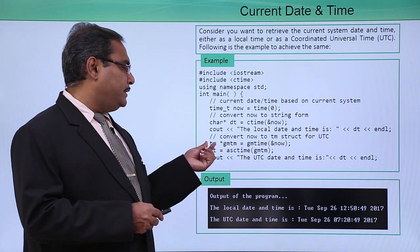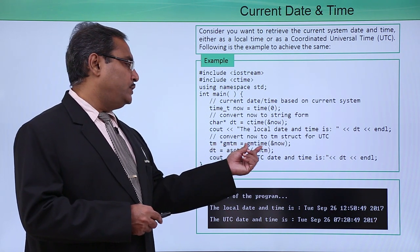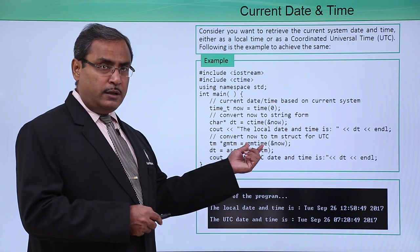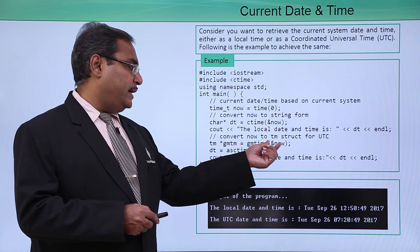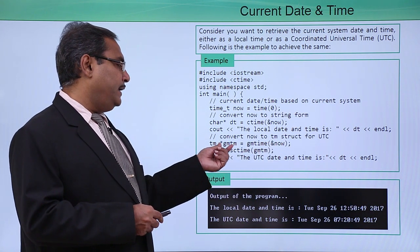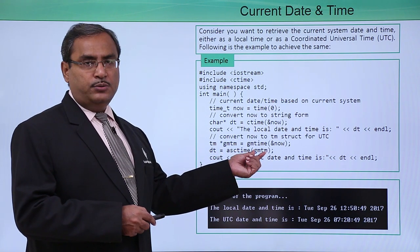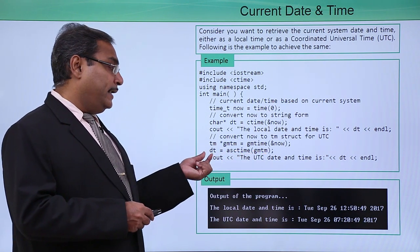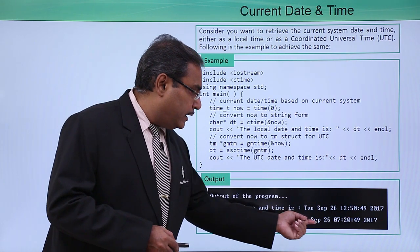We are also going to print this tm pointer gmtm. We have defined one variable which is taking this gmtime and taking this ampersand now, that is a reference of now it is taking as input argument and it is getting initialized. And later from this asctime we are using this one as input argument getting this dt and dt is getting printed and the output is coming like this.